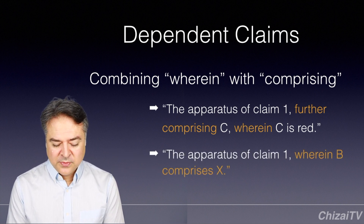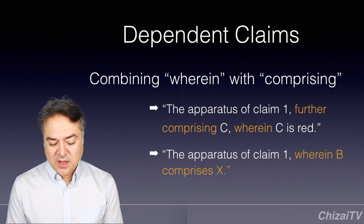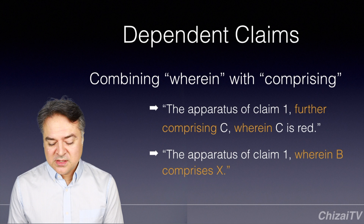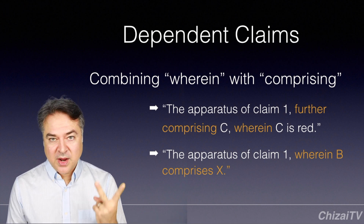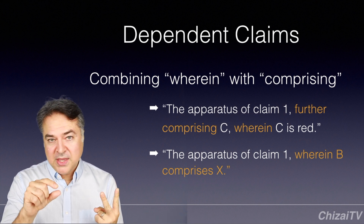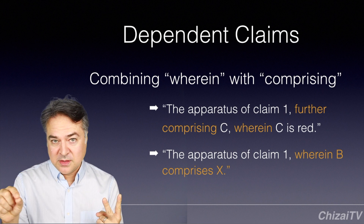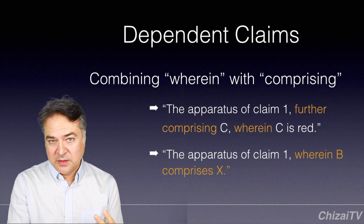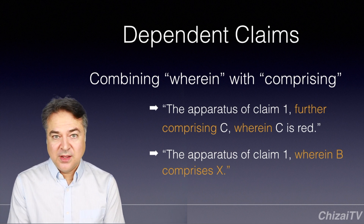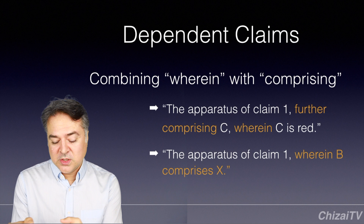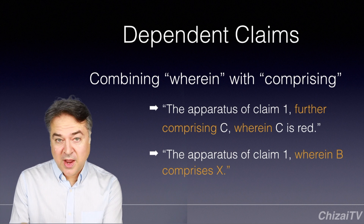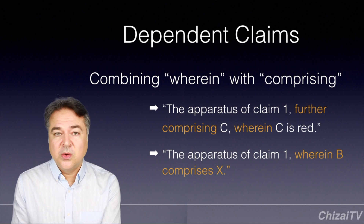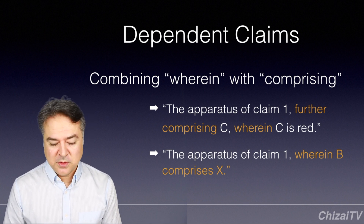Here's another thing we can do. We can say 'the apparatus of claim 1, wherein B comprises X.' In this situation, the apparatus comprises A and B, but B comprises some additional elements. So we're adding something to the B element. In a dependent claim, we can say 'wherein B' — meaning we will further specify feature B — and then 'comprises X,' adding feature X to the existing feature B.